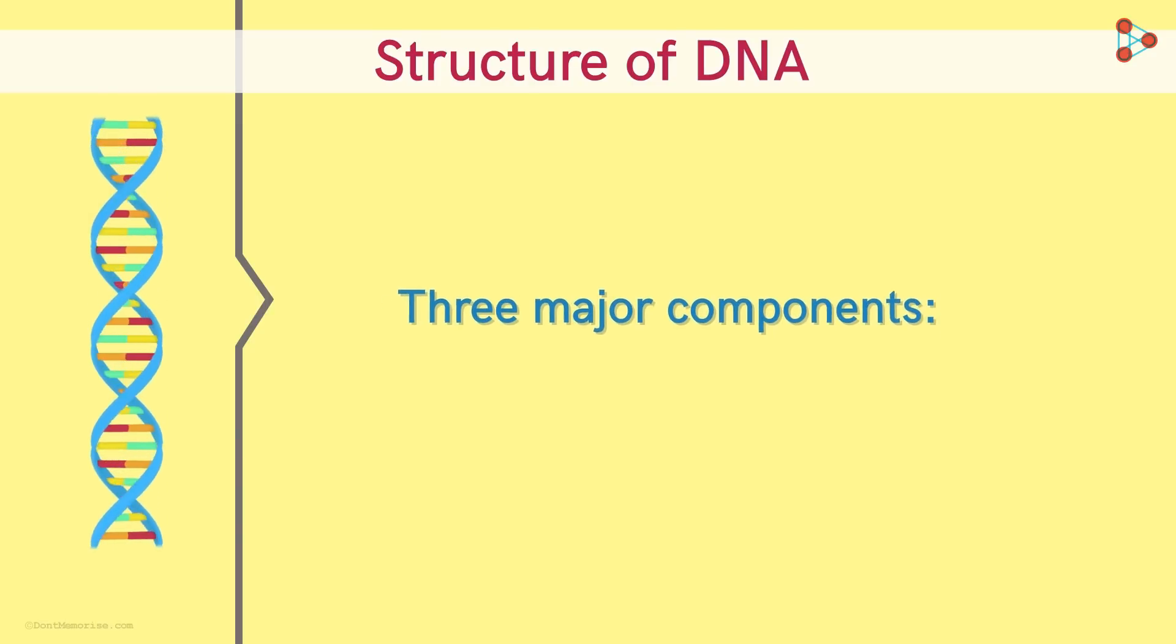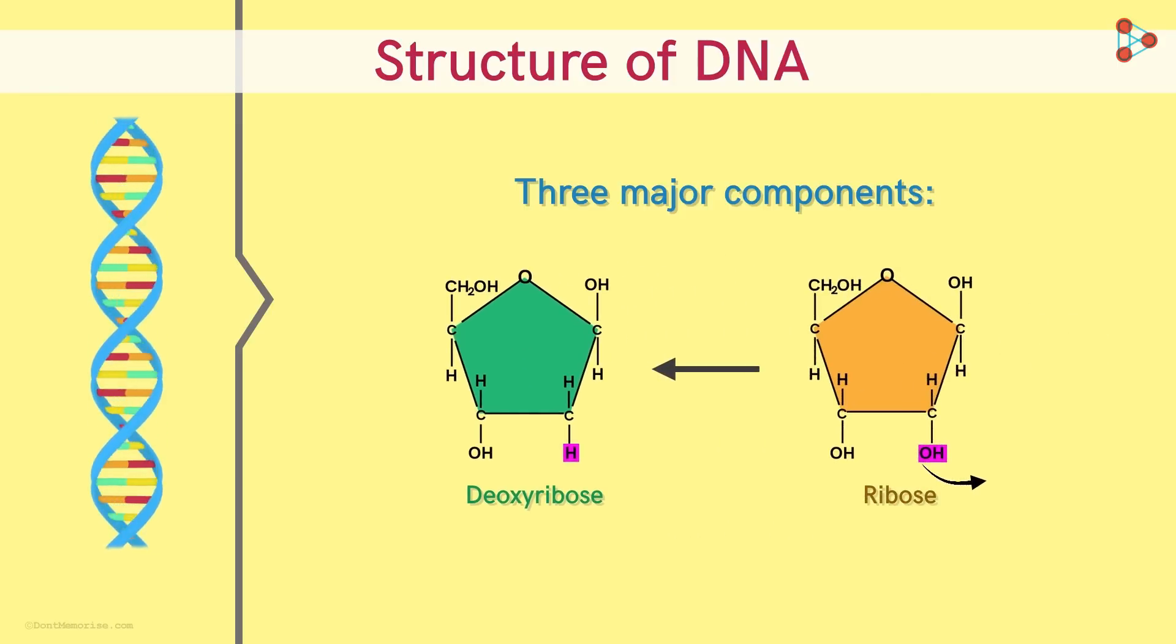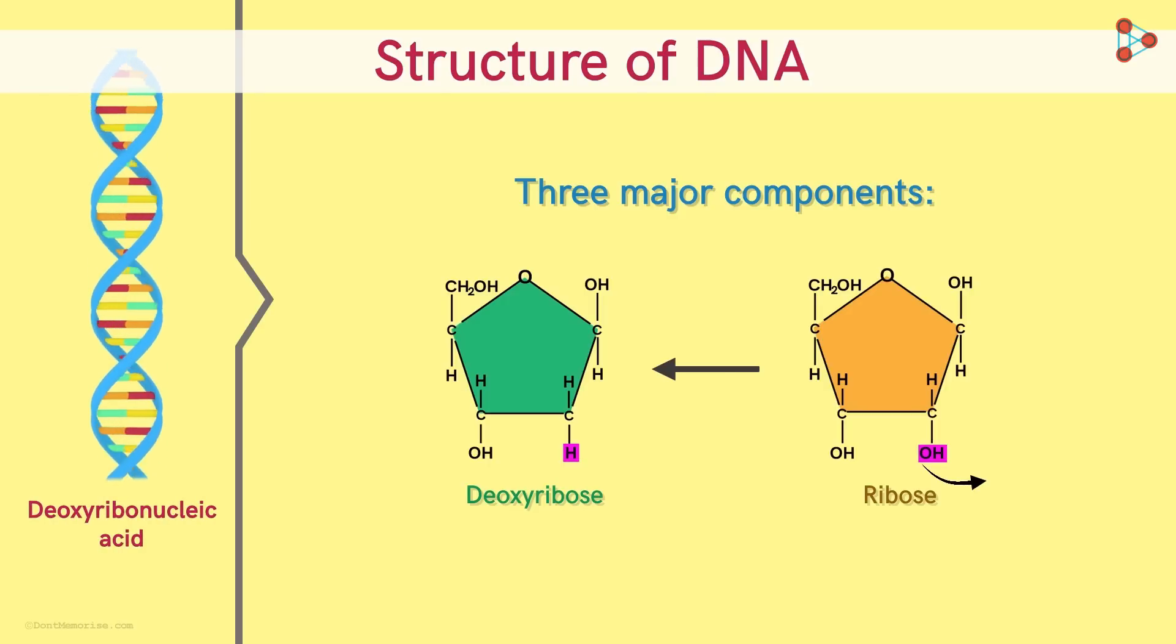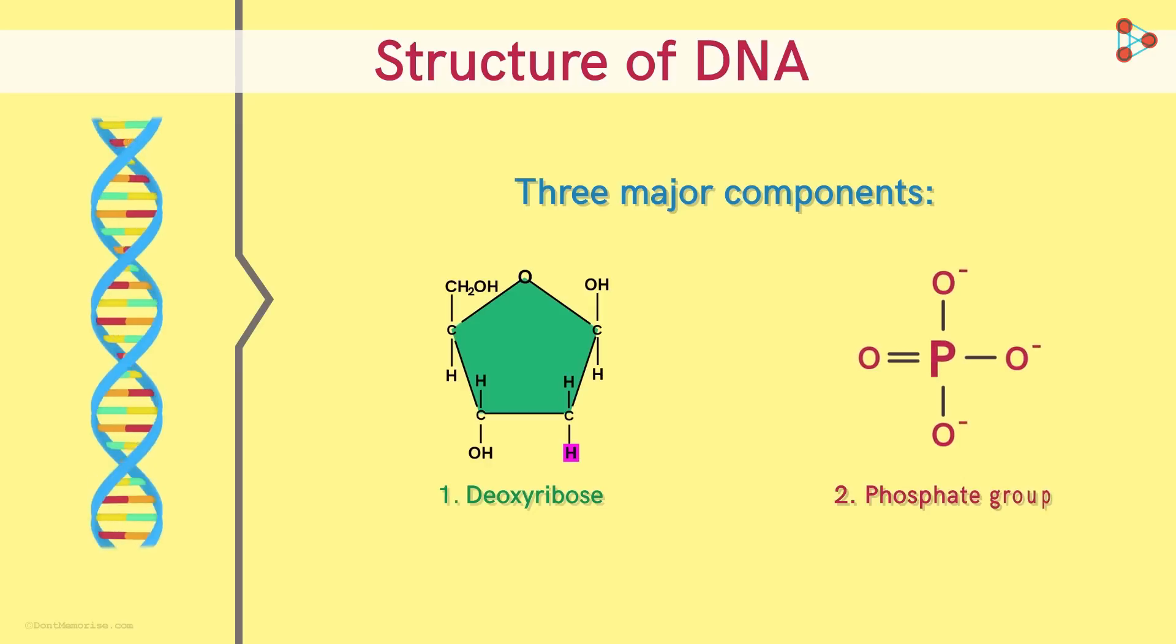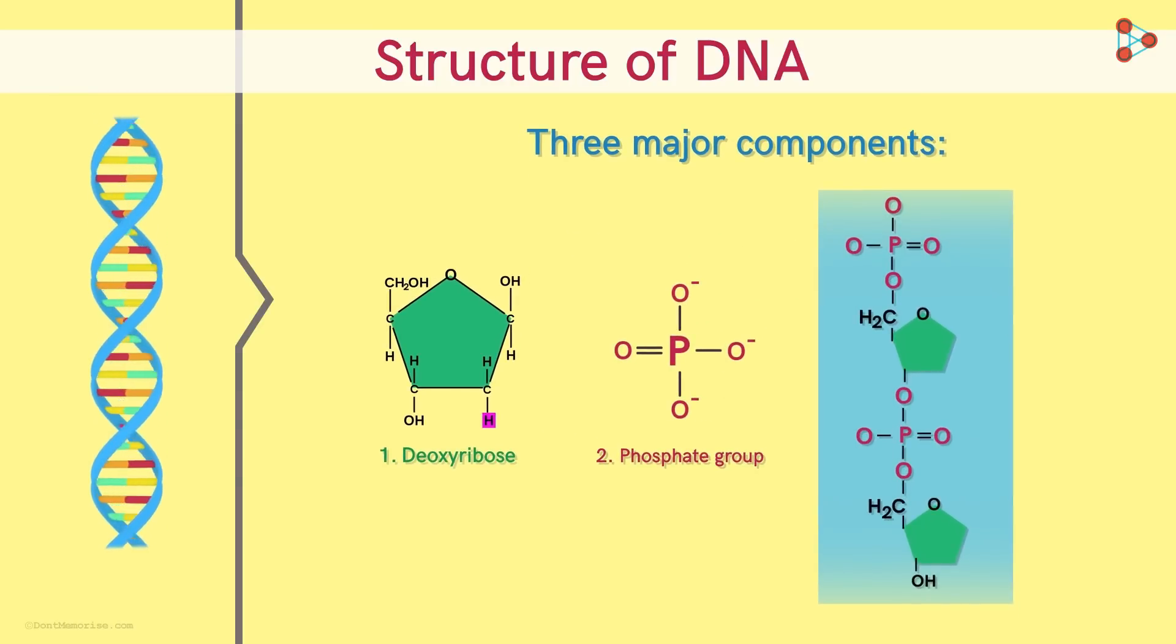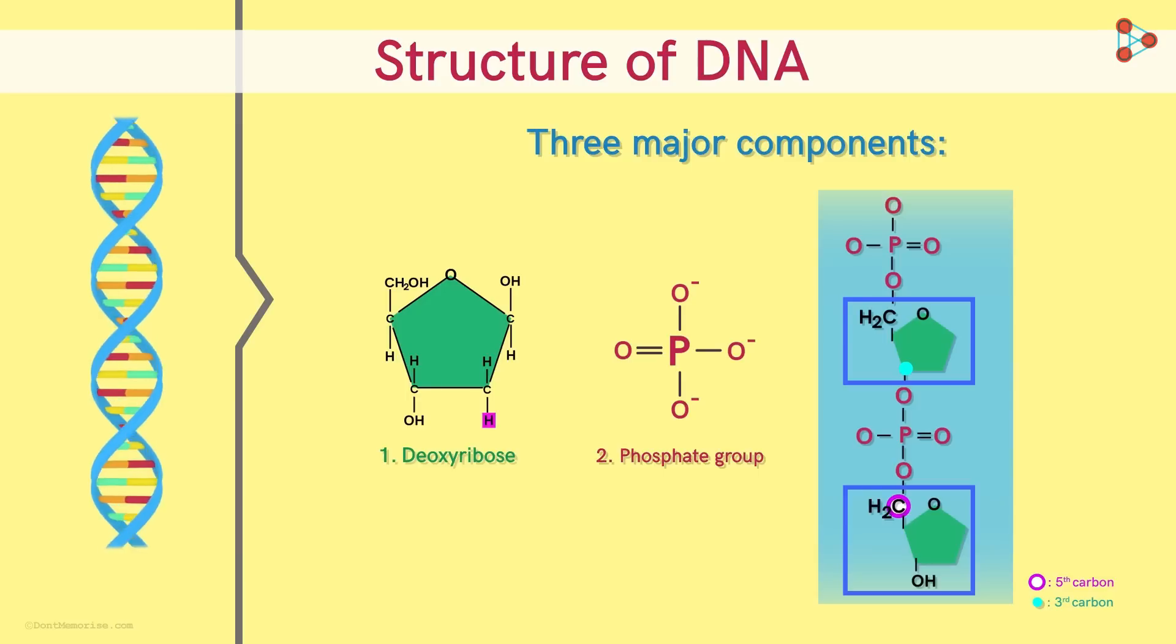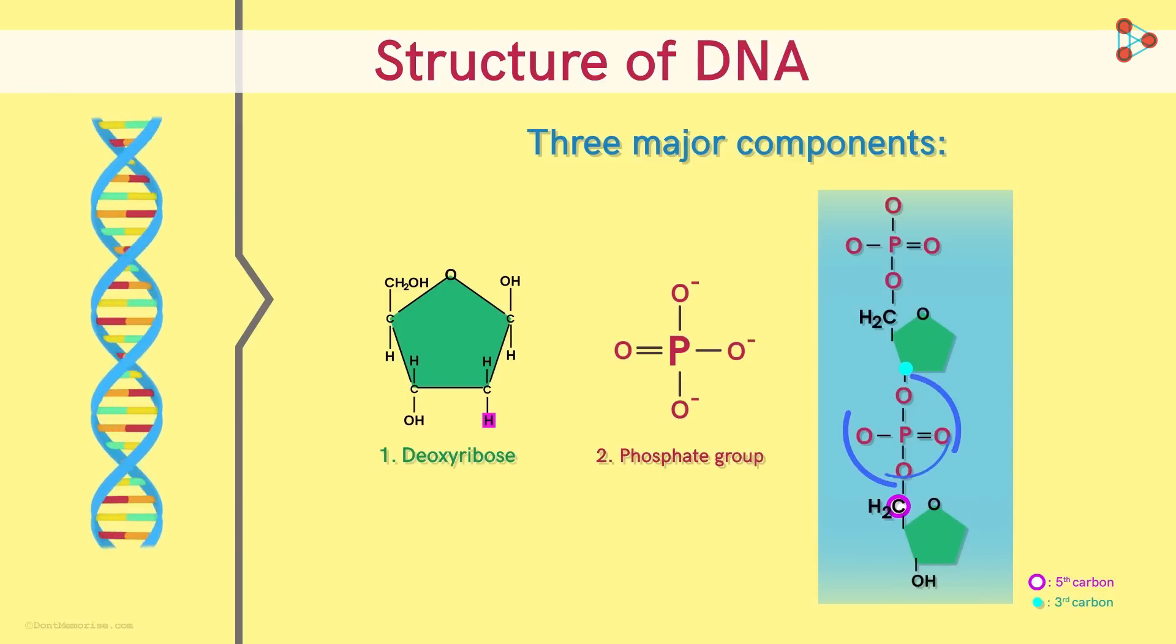One is a pentose sugar molecule called Deoxyribose. How is this obtained? It is obtained by removing one oxygen atom from a ribose molecule. Thus the name Deoxyribonucleic acid. The second component is Phosphate group. This helps bind the two Deoxyribose molecules together. The third and the fifth carbon atoms of the adjacent Deoxyribose molecules are bound by the phosphate groups.